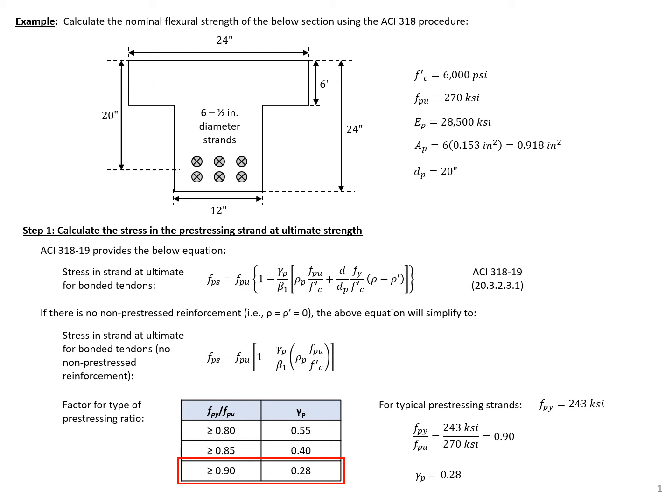In this example problem, we're going to calculate the nominal flexural strength of the section shown using the ACI 318 procedure with the rectangular stress block and the equation given in the code for calculating the stress in the prestressing strands. We have six half-inch diameter strands, and you can see some of the required material and section properties shown here.